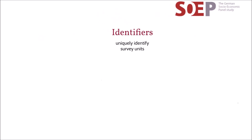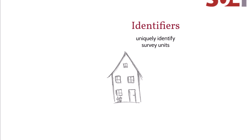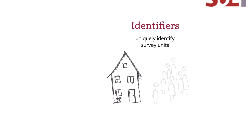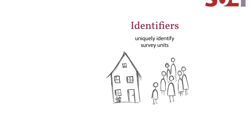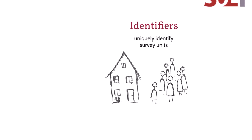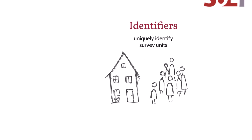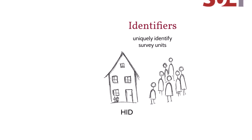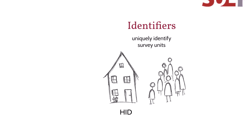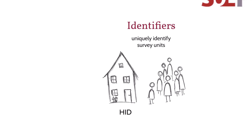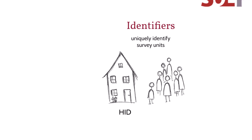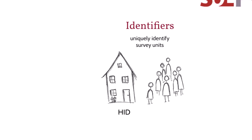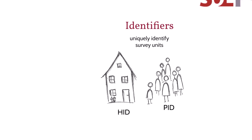Identifiers uniquely identify particular survey units. In the case of the SERP, survey units are either households or individuals. The primary identifier on the household level is the current household ID, HID. The primary identifier at the individual level is the personal ID, PID.